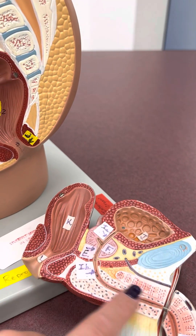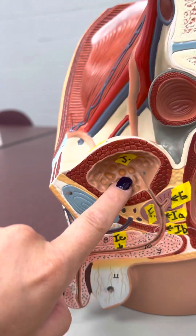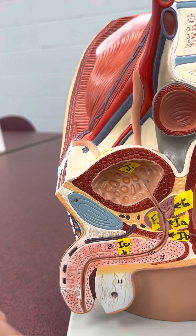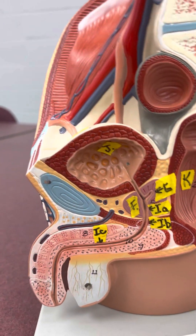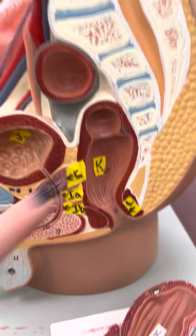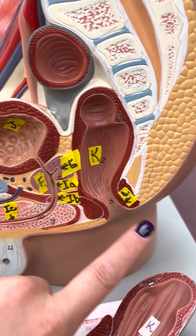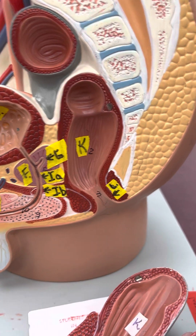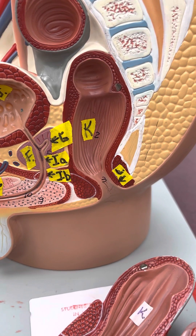Then you get to the urinary part of the urethra, coming out of the bladder. The bladder is up here — that's J. K is the rectum. And L is the anus.